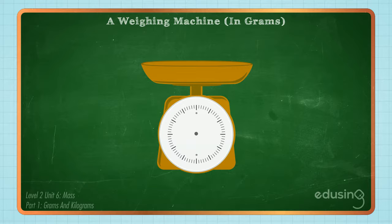A weighing machine has a rotating needle and a circular disk marked in standard units of mass. A common unit of mass is the gram. We write g in small letter to stand for gram.